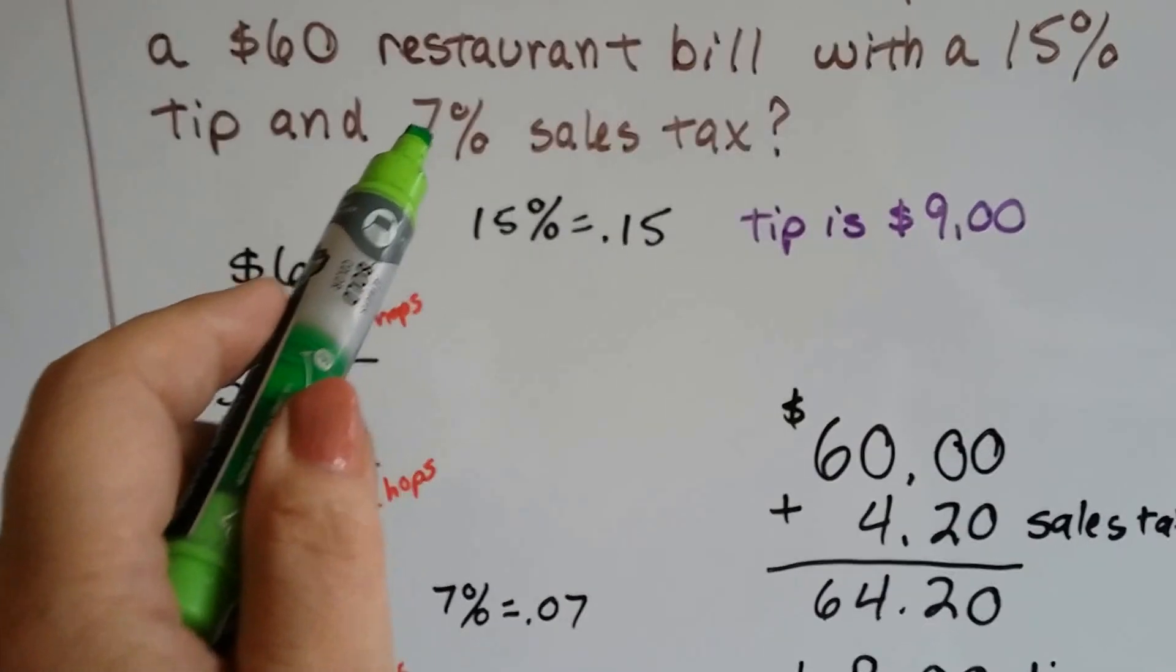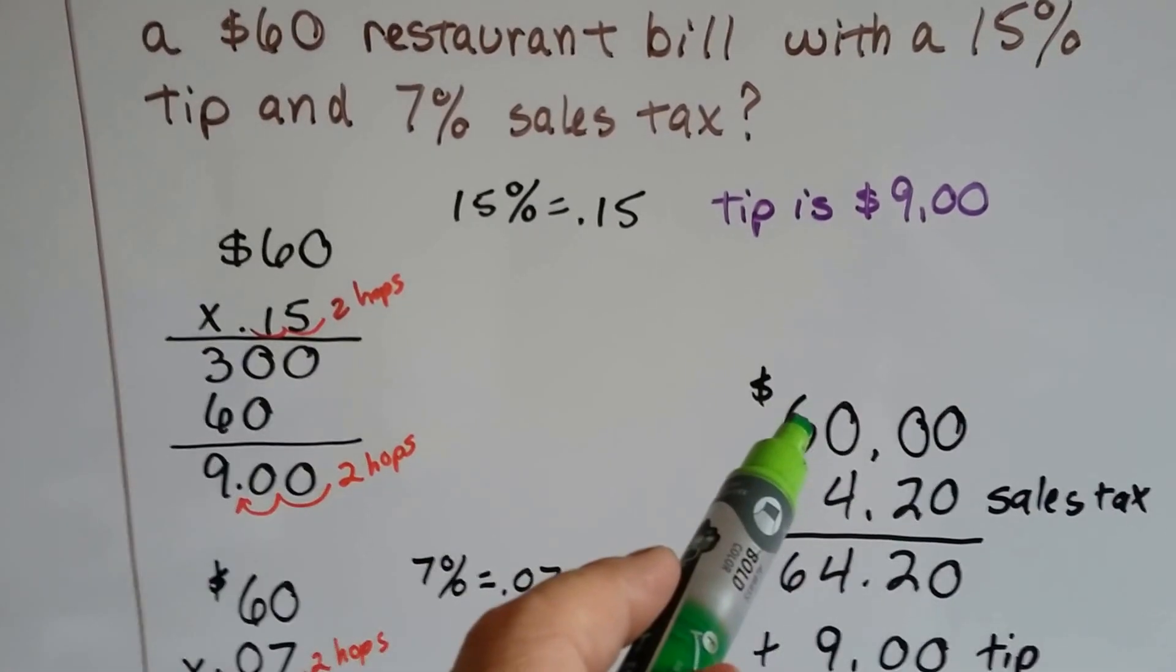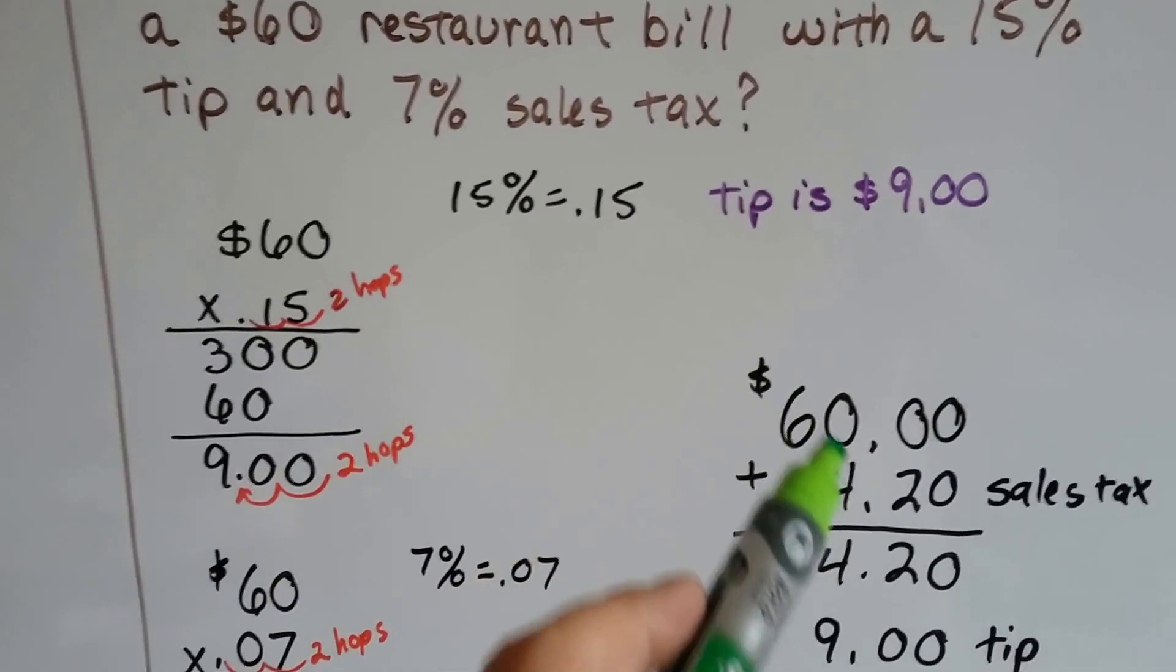Now to do the sales tax, we start back at the $60 again. Because we don't tip, we don't add the tax to the tip.